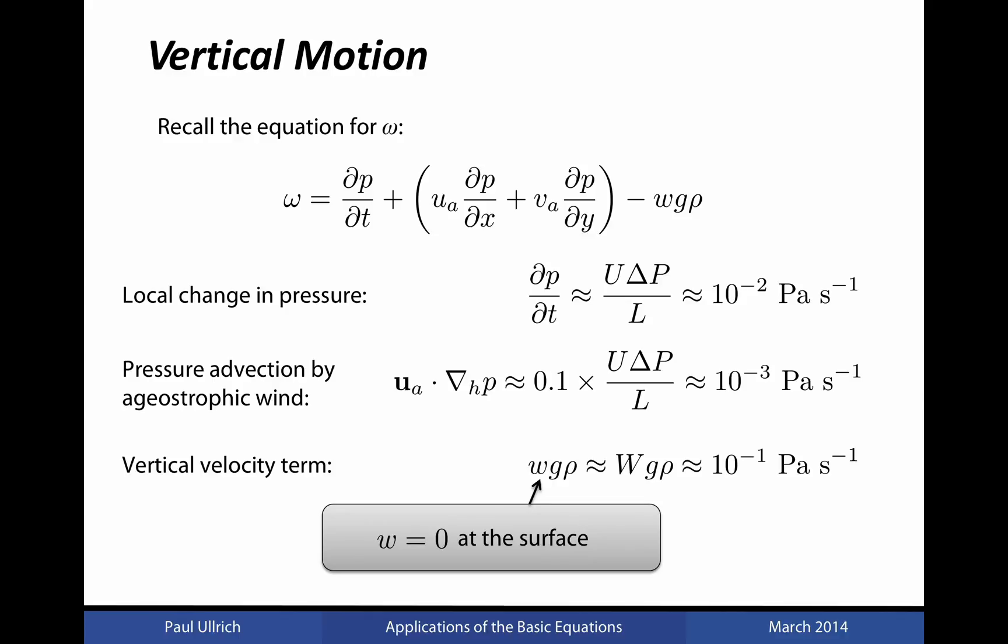Recall our original equation for omega that relates it to the vertical velocity w. This expression includes three terms. The first term is the Eulerian change in pressure. The second term is advection of pressure by the ageostrophic wind, and the third term incorporates the vertical velocity.